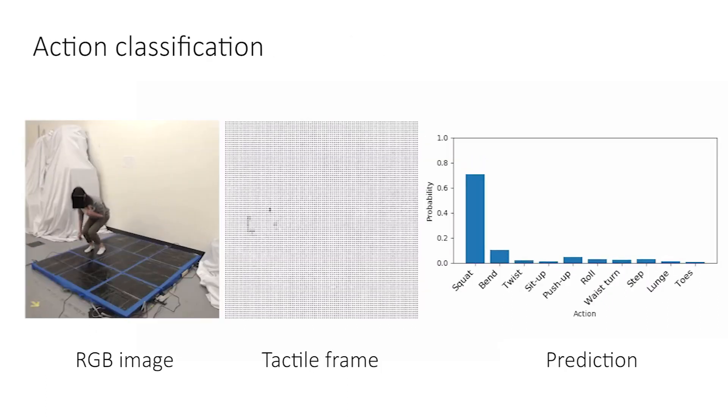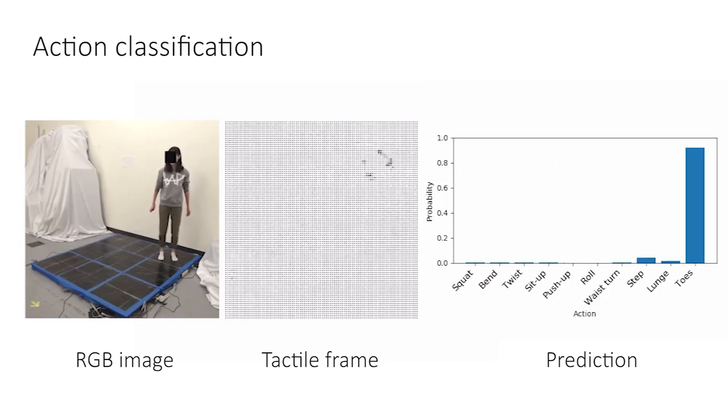By applying a linear classifier on the tactile feature map, our model also shows the capability to facilitate downstream classification tasks. Here, classification is performed on 10 actions, including squatting, bending, twisting, sit-up, push-up, rolling, waist-turning, stepping, lunging, and standing on toes.